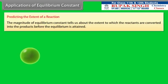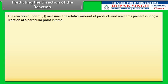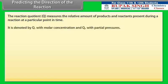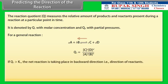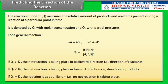Applications of Equilibrium Constant — Predicting the extent of a reaction: The magnitude of the equilibrium constant tells us about the extent to which reactants are converted into products before equilibrium is attained. Predicting the direction of reaction: The reaction quotient Q measures the relative amount of products and reactants present at a particular point in time, denoted by Qc with molar concentrations and Qp with partial pressures. If Qc > Kc, the net reaction proceeds in the backward direction. If Qc < Kc, the net reaction proceeds in the forward direction. If Qc = Kc, the reaction is at equilibrium and no net reaction is taking place.